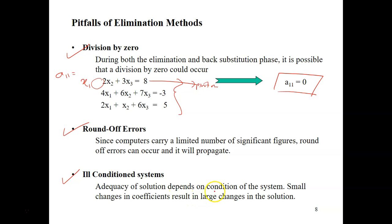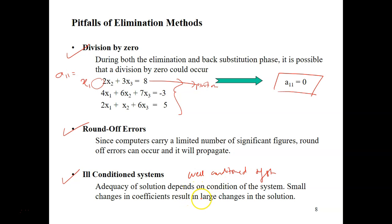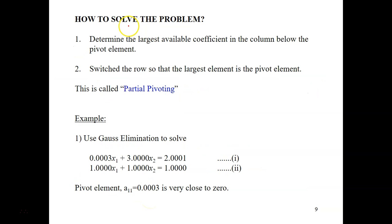The third pitfall is ill-conditioned systems. The adequacy of a solution depends on the condition of the system — small changes in coefficients will result in large changes in the solution. A well-conditioned system is the opposite: a small change in one of the coefficients results in a similarly small change in the solution.